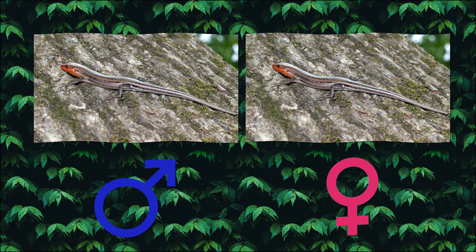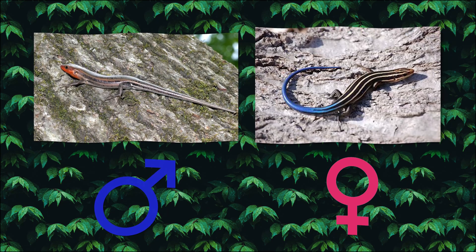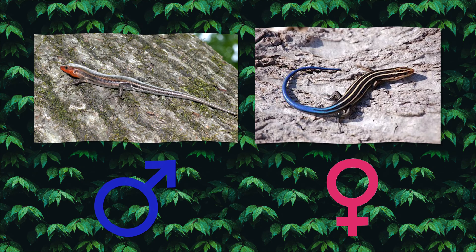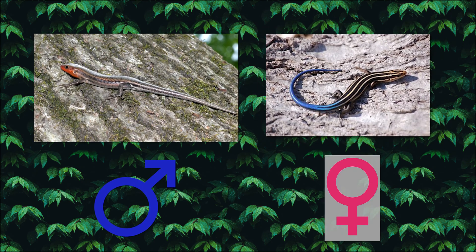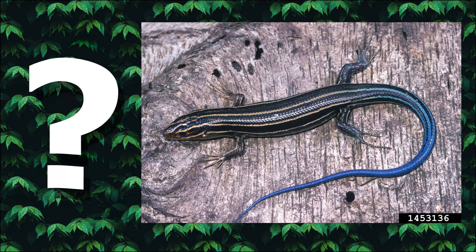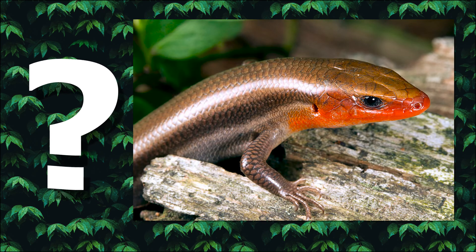Females, however, are more likely to retain that blue tail color as they age. Also, females tend to be smaller and lack the orange coloration on their snouts. Why is it that female five-line skinks tend to look so different from the males?